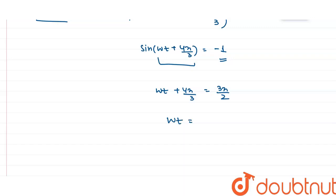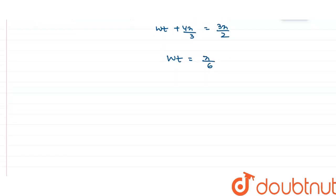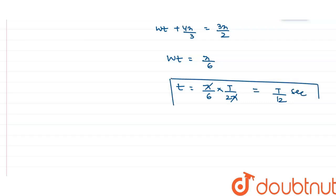From this, ωt equals 3π/2 minus 4π/3, which equals π/6. Since ω equals 2π/T, we can write (2π/T)·t equals π/6, so t equals T/12. The π's cancel out, giving a time of T/12 seconds. This is the time taken by the particle to reach the negative extreme, and this is the answer to part B.